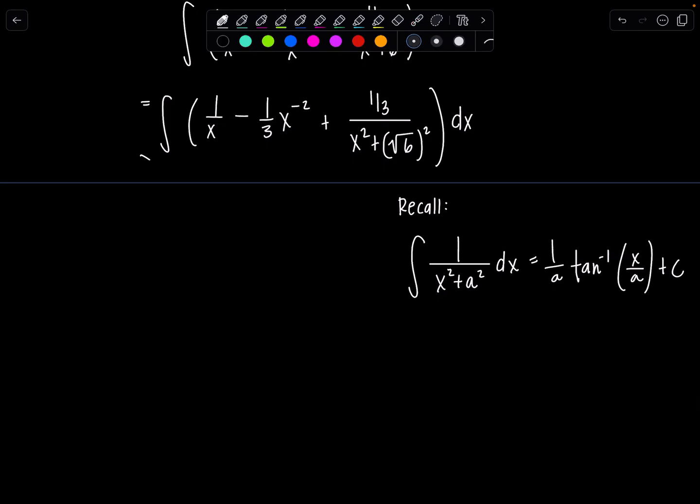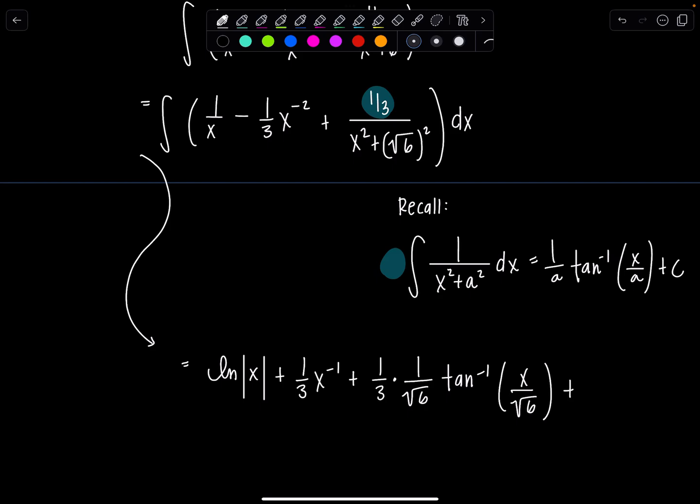I don't need to split these up. We can just knock it all out. So we've got, for the first term, natural log, absolute value of x. Don't forget the absolute value. Now, I'm going to add 1 to the exponent here, divide by the new exponent, so it's going to be plus one third x to the negative first, plus, don't let this one third freak you out. Just pull it outside in your mind. It just hangs out, comes along for the ride, one third, then we have 1 over a, so 1 over rad 6, tan inverse of x over a, so that would be x over rad 6 plus c.